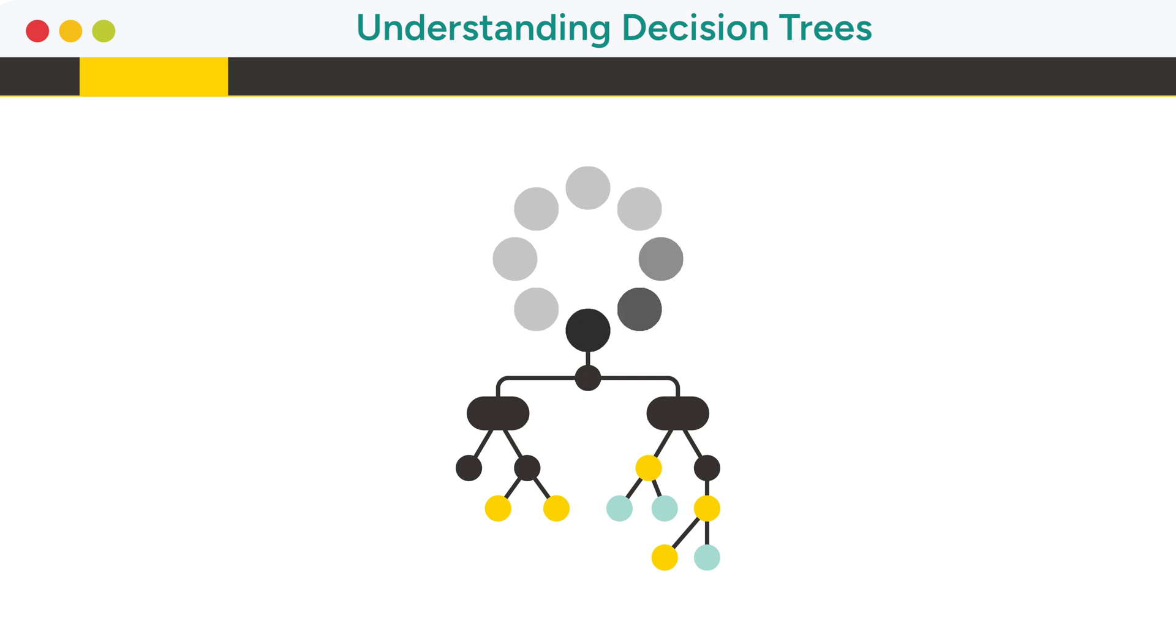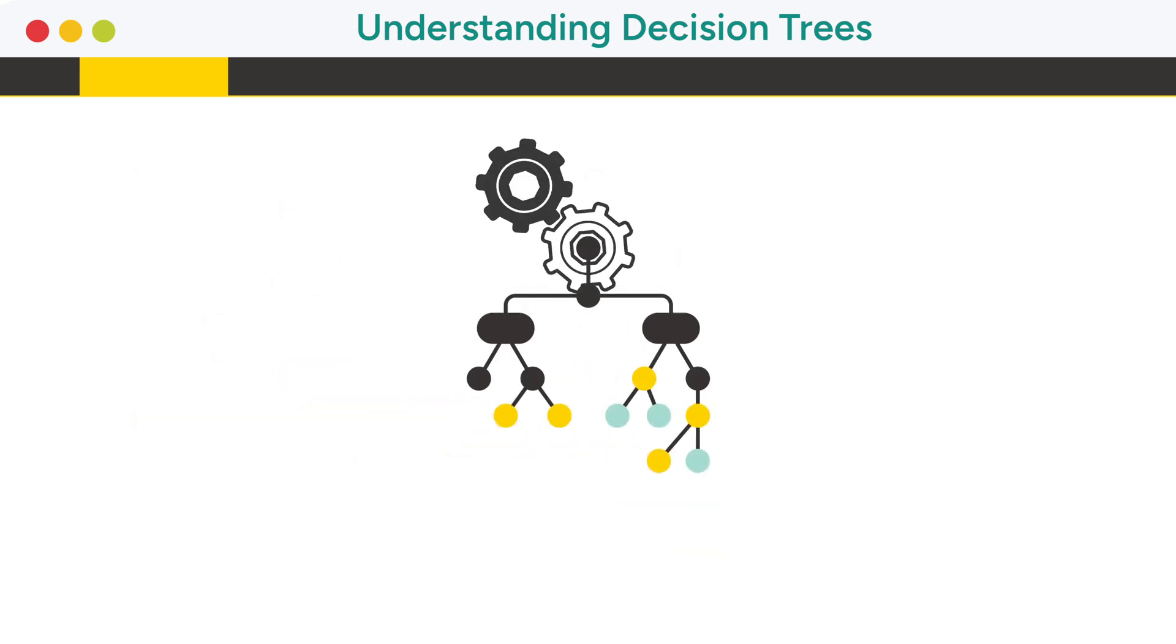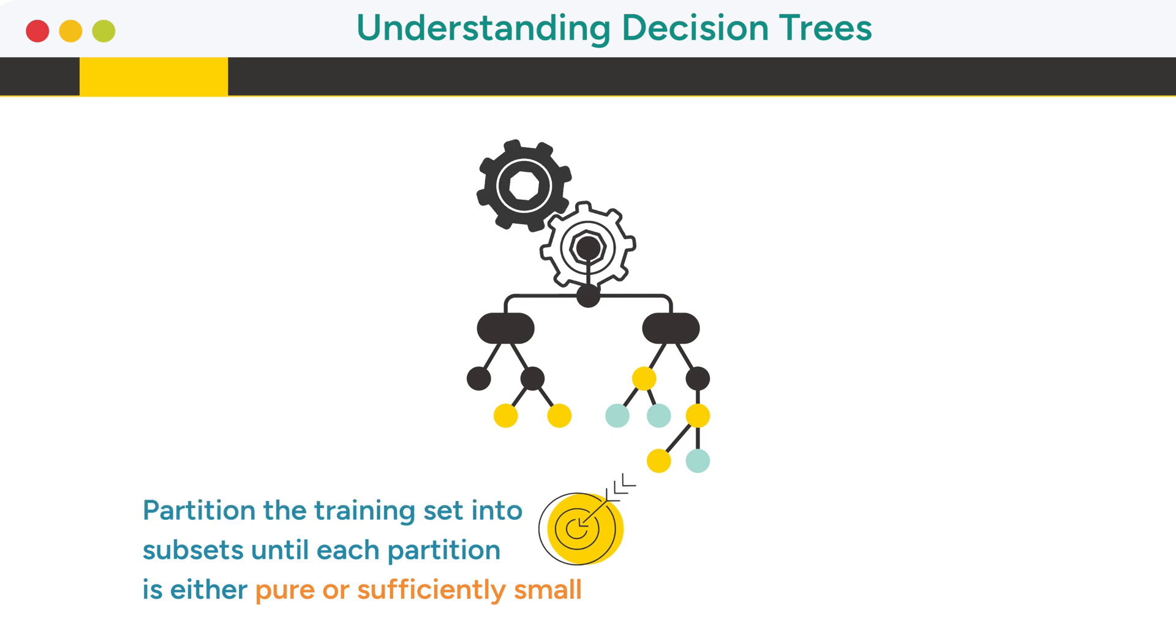The decision tree algorithm runs in the background of the decision tree learner node. The goal when training a decision tree is to partition the training data set into subsets until each partition is either pure or sufficiently small.